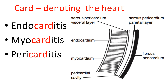Here we see some examples of "card" representing the heart in pathological conditions: endocarditis, myocarditis, pericarditis. "Endo" means inside, "myo" means muscle, and "peri" means around about the outside. So the endocardium is the inner lining of the heart, the myocardium is the muscle middle layer of the heart, and the pericardium is the fibrous sac around about the heart.